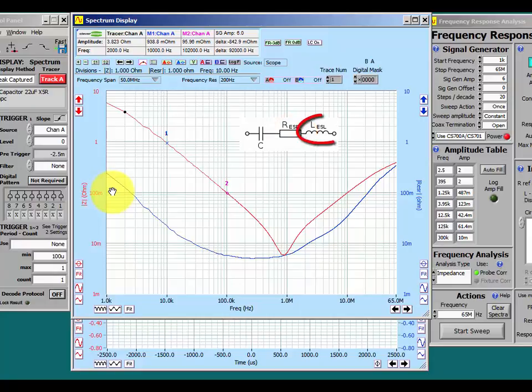The effective series inductance limits the high frequency performance of the capacitor. The impedance of the inductance starts to dominate the impedance of the capacitor. We can see that in the standard characteristic curve of the impedance plot, which we see right here.